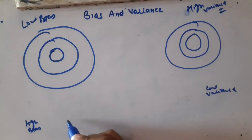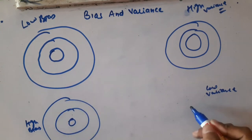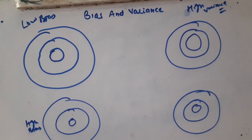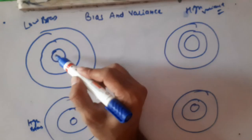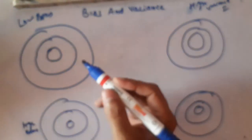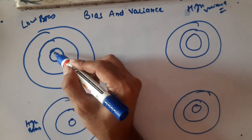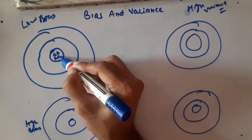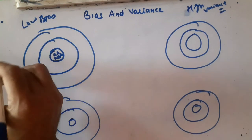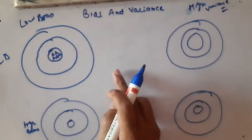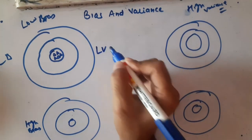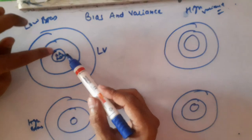The inner circle of the bullseye represents the truth. When we have all the data points near to this inner circle and they are also clustered together, this represents low bias and low variance. Low bias means the data points are near to the truth, and low variance means they are not scattered — they are clustered together.